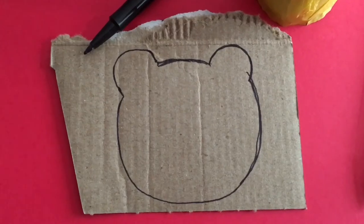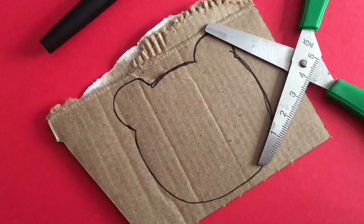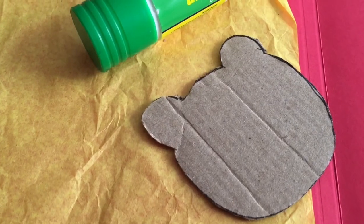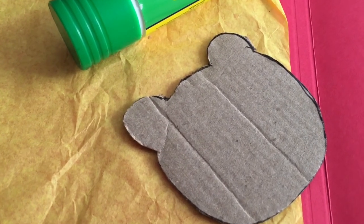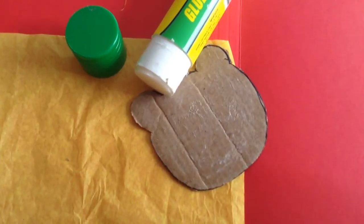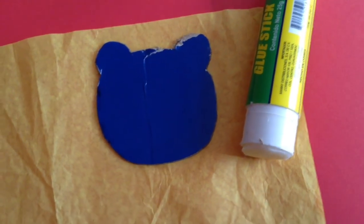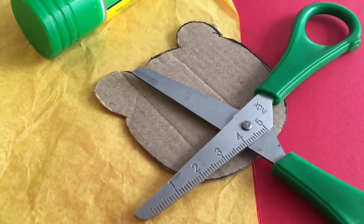On the paperboard, draw a face and two ears. Cut it. We are going to cover our face with the yellow paper. Cover the face with the glue stick. Paste the face on the yellow paper. Cut the paper.